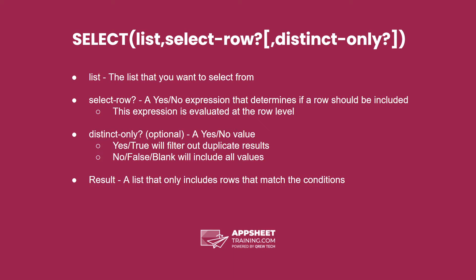Finally, you have a distinct only option. This is a yes-no value that will either filter out duplicate results or leave them in. The result is a list that only includes the rows that match the conditions.